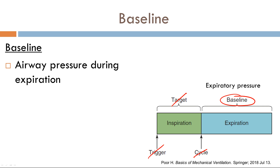The definition is quite straightforward. It is the airway pressure during expiration. Now up to this point, the first three variables we talked about — trigger, target, and cycle — were during inspiration. The baseline phase is the only variable that's during expiration.